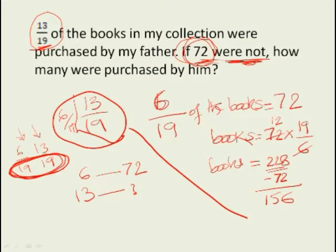We don't need to find out the total number of books, we just look at this relationship that if 6 becomes 72, 13 becomes what? So 6 becomes 72, how can 6 become 72? If you multiply it by 12, it can become 72. If you multiply the same 12 by 13, we'll find out this number. 13 times 12 gives you 156.